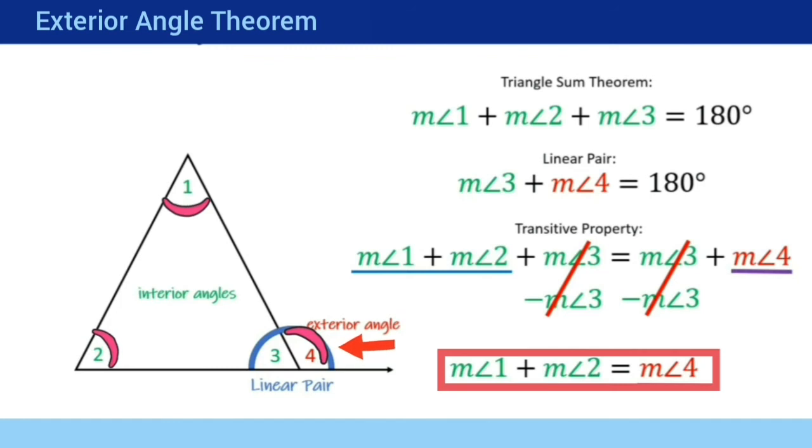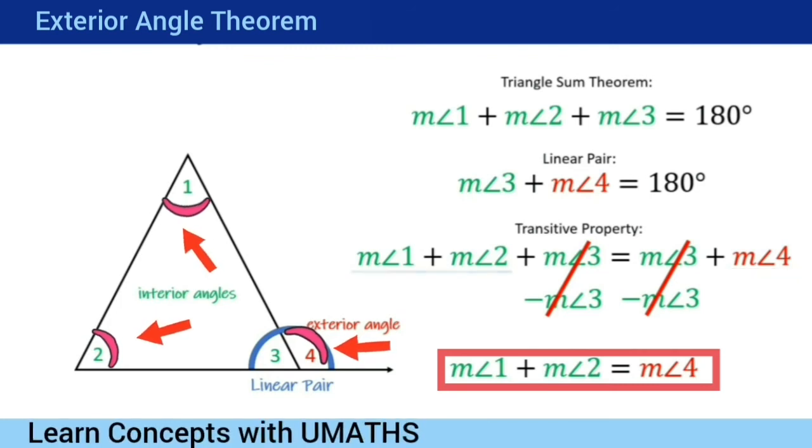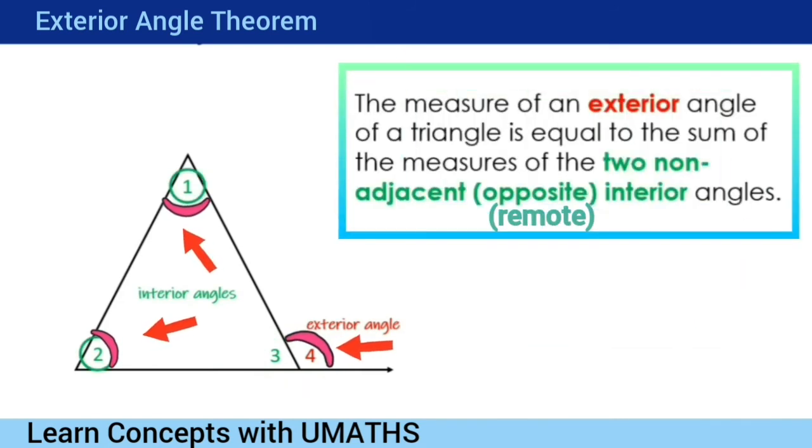If you noticed, angle 4 is the exterior angle and angle 1 and angle 2 are the interior opposite angles. This proves that the measure of an exterior angle of a triangle is equal to the sum of the measures of its remote interior angles.